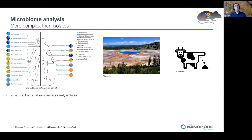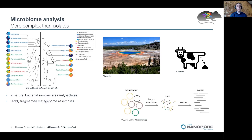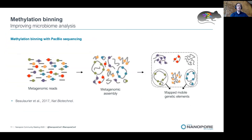In nature, bacterial samples are rarely isolated, and the microbiome is becoming more and more relevant for human health and for understanding the environment. However, studying the microbiome is more complex than individual samples because sequencing generates highly fragmented metagenomic assemblies. To perform the most refined study, you often need to do binning of those metagenomic sequences — and methylation binning can also play a role here.